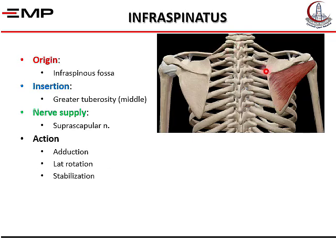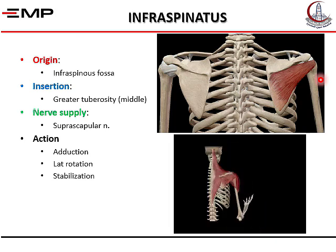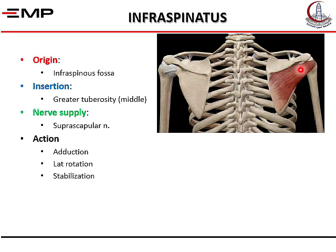Infraspinatus takes origin from the infraspinous fossa and inserts into the middle impression of the greater tuberosity. Its nerve supply is the suprascapular nerve. Its action is lateral rotation of the humerus and stabilization of the shoulder joint. There are four muscles that stabilize the shoulder joint — the supraspinatus, infraspinatus, teres minor, and subscapularis. These four muscles are called the rotator cuff.